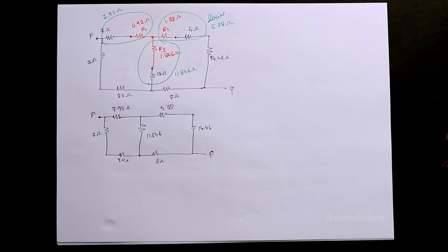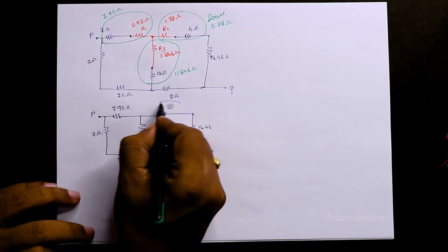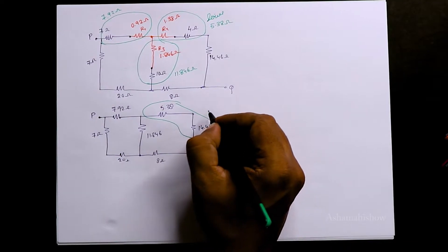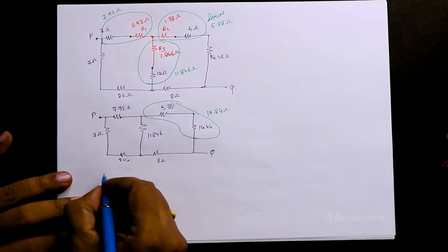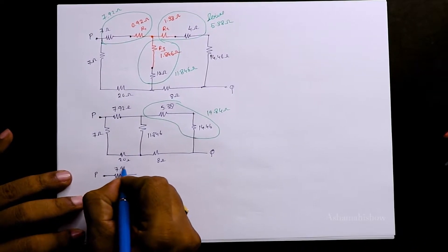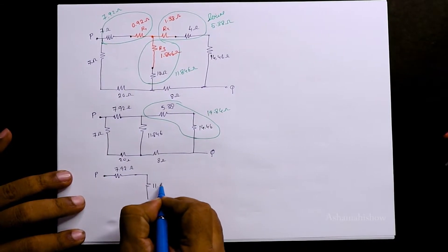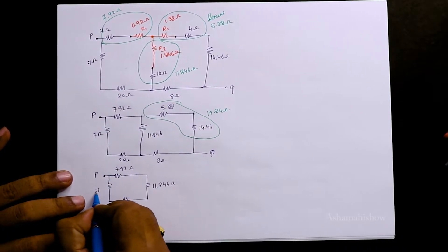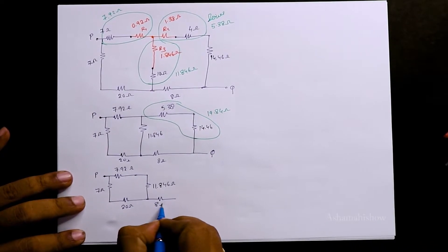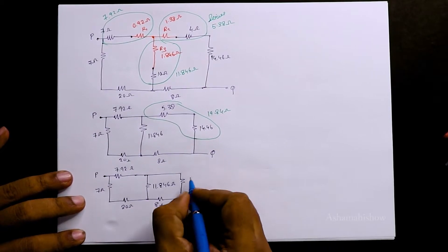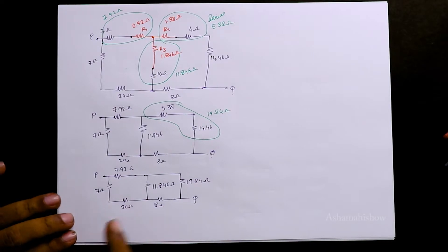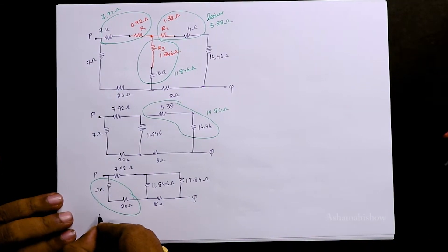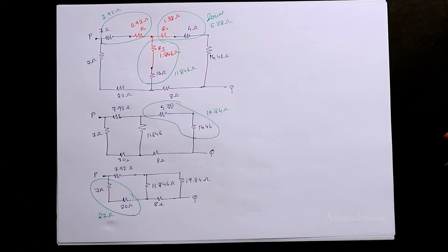Do we have any other series connections? Yes — 5.38 + 14.46 = 19.84 ohms. So the diagram is further reduced. We have: 7.92 ohms, 11.846 ohms, and the new 19.84 ohms, plus 7 and 20 ohms, and 8 ohms. We also see another series: 7 + 20 = 27 ohms.